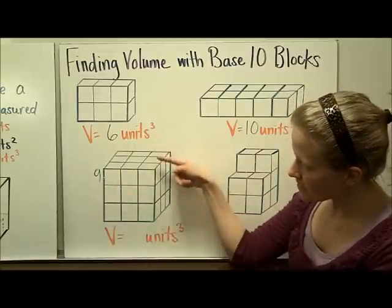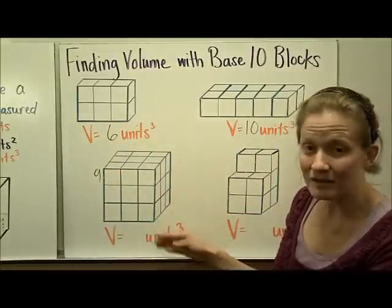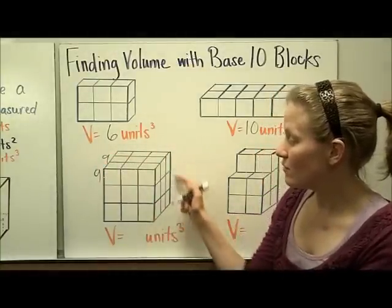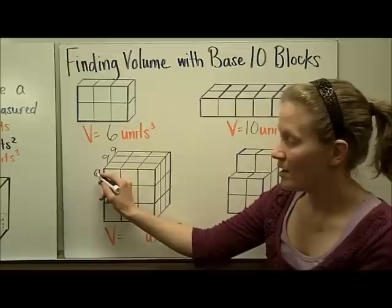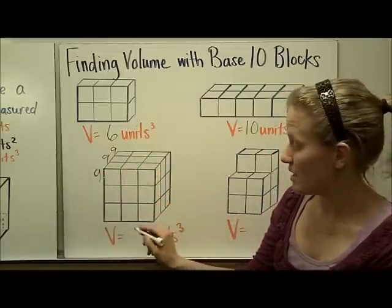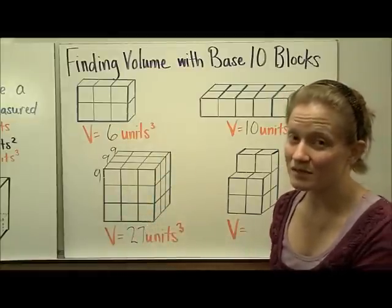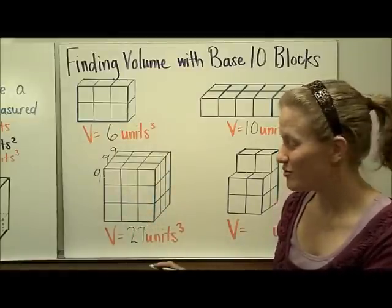Then we have another slice right behind it that's going to be exactly the same, 9 more. And then there's a third row in the back or a third slice which would be 9 more. So 9 times 3 would be 27. The volume of this cube is 27 cubic units.